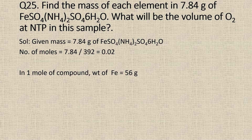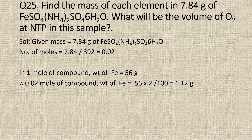Now, in 1 mole of ferrous ammonium sulfate, the number of moles of iron is 1. So the weight of iron is 56 grams. Therefore, in 0.02 moles of the compound, the weight of iron is 56 into 0.02, which is equal to 1.12 grams.